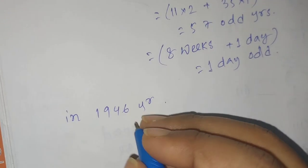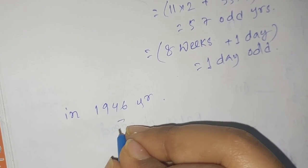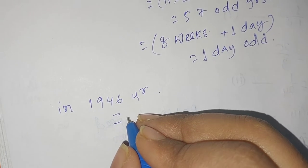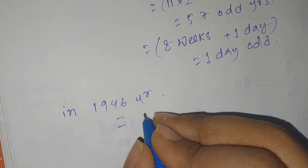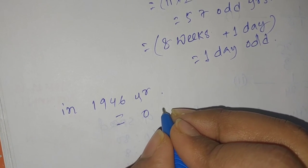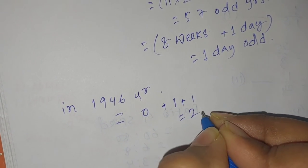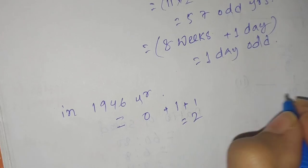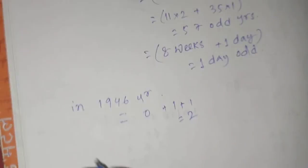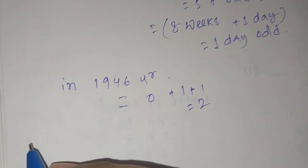How many odd days are there? That means in 1946 it is zero plus one plus one, means two odd days are there.